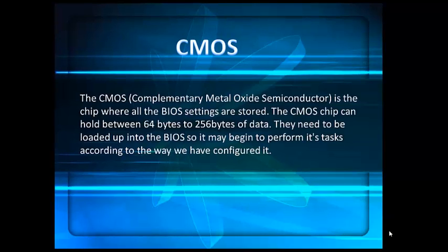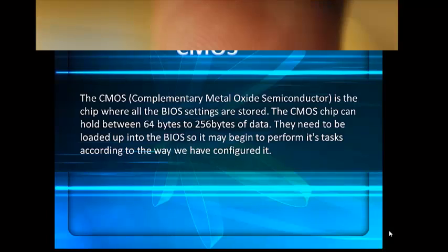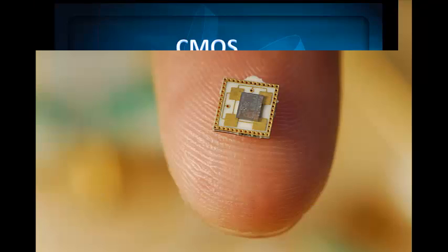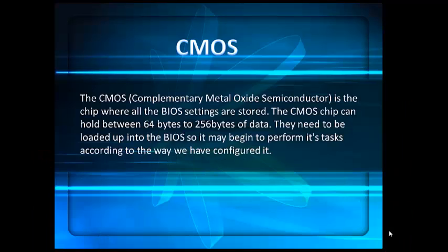CMOS is the chip where all the BIOS settings are stored. The CMOS chip can hold between 64 bytes to 256 bytes of data. These settings need to be loaded up into the BIOS so it may begin to perform its tasks according to the way we have configured it.